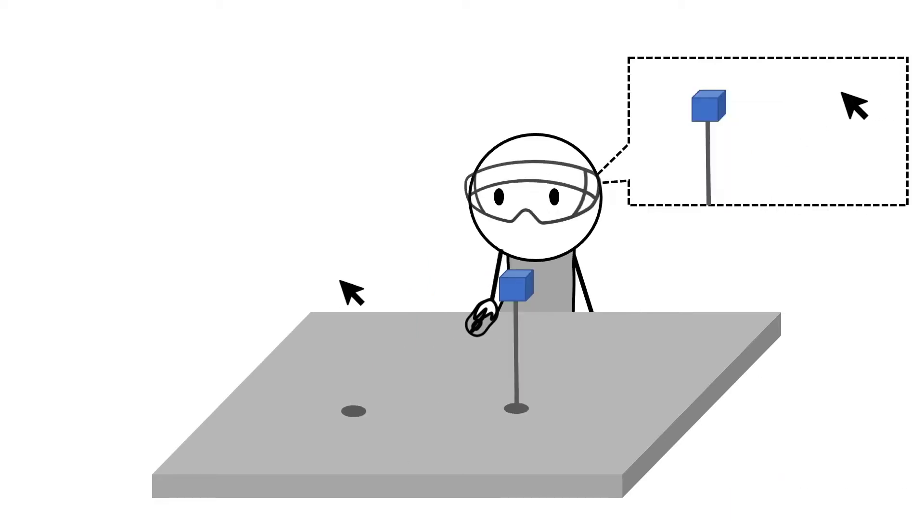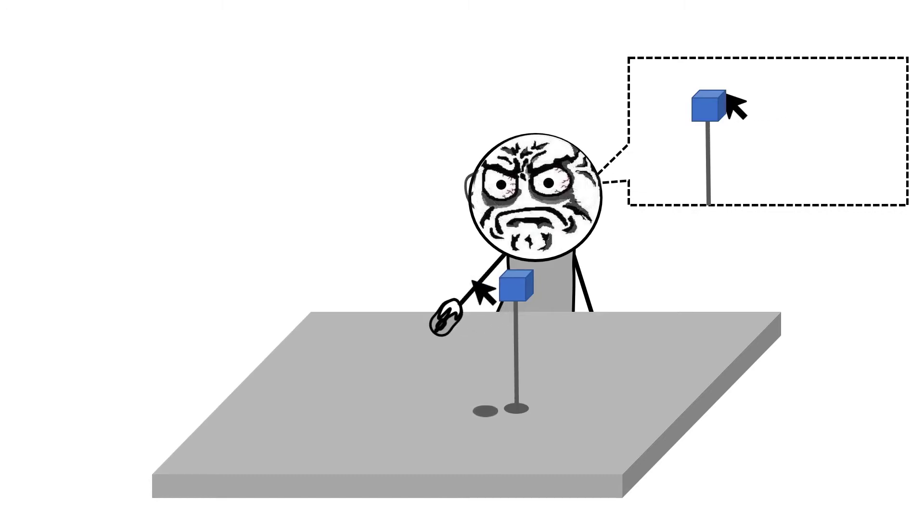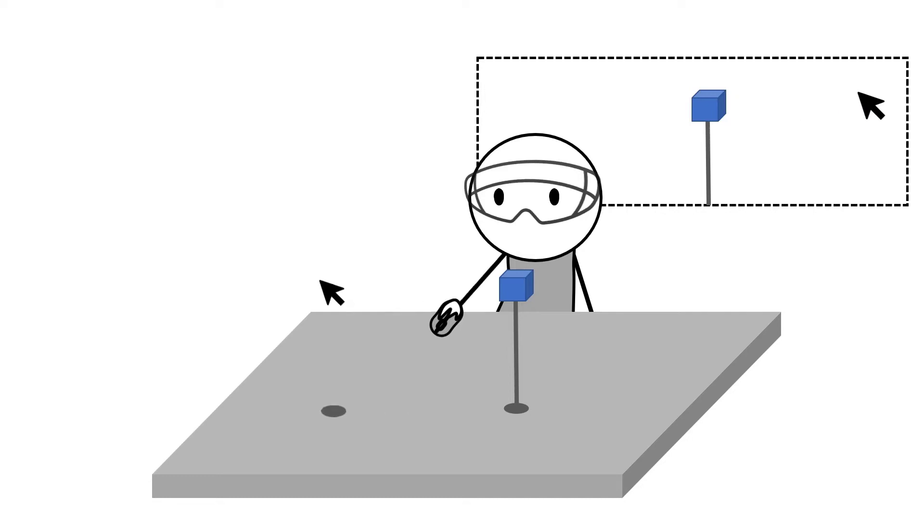When the sensitivity of the control is improperly calibrated, a user may have to clutch multiple times to travel to a distant object, or it may be just too sensitive to select something precisely.